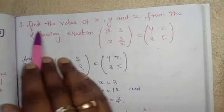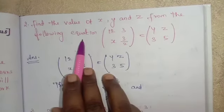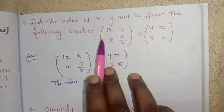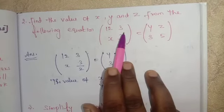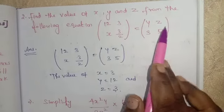Sum number 2: Find the value of X, Y and Z from the following equation. Matrix (12, 3; X, 3/2) is equal to (Y, Z; 3, 5).